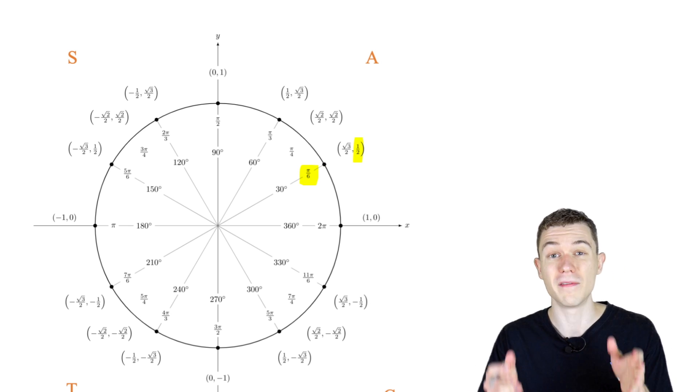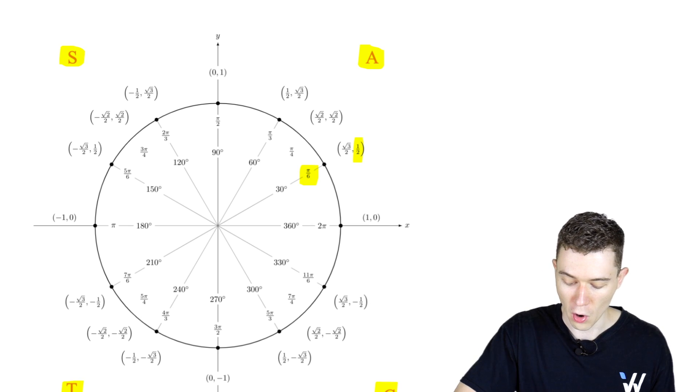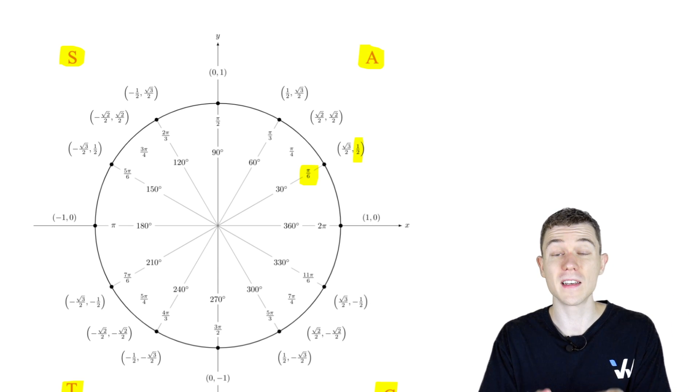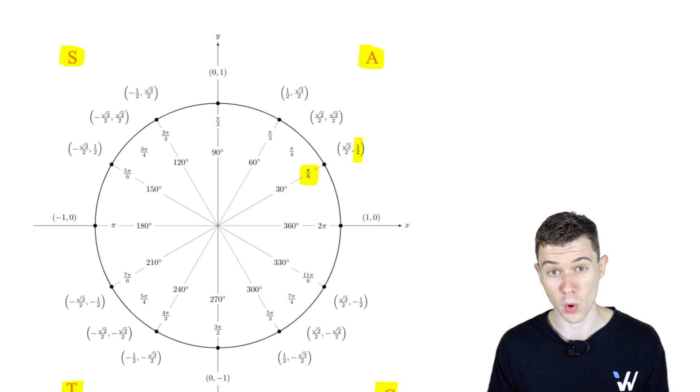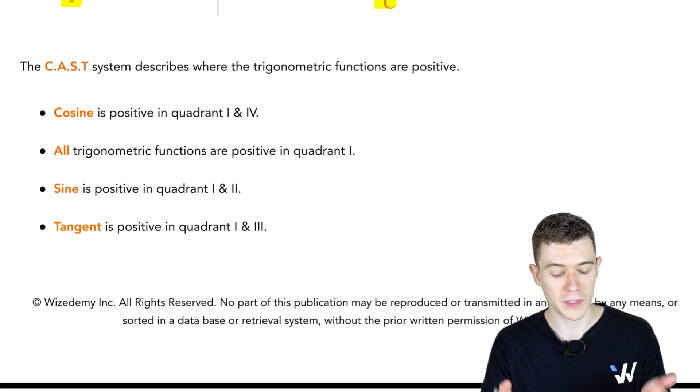We also have this rule called the all students take calculus rule, or you can read it a different way as CAST. This tells us whether our trig values should be positive or negative based on which quadrant we're in.